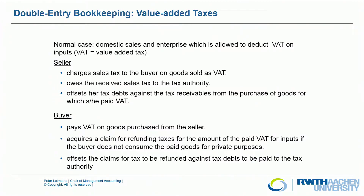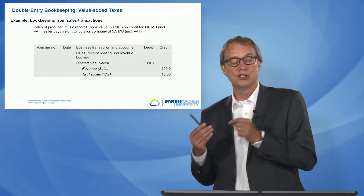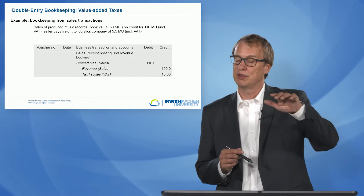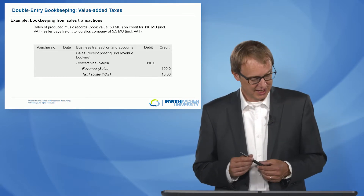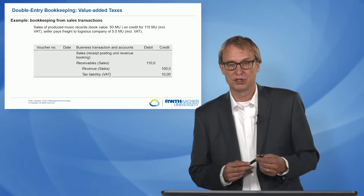So that's the overall structure. Now we go to the bookkeeping consequences using a simple example. We sell produced music records — not that old-fashioned since they're becoming more fashionable again. The book value of these music records is 50 euros, sold on credit for 110 euros, which already includes the value-added tax of 10%, so it's 100 euros net price plus 10 euros VAT. The seller also pays freight to the logistics company of 5.5 euros, which also includes the taxes.